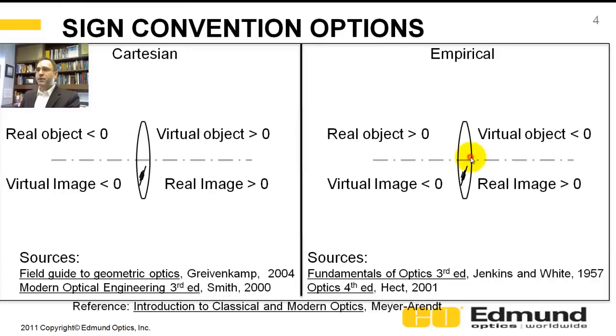As opposed to the empirical where if you have a real image to the left of your lens, you're going to have a positive distance. And this flips when you're doing an image to the left of the lens. It will be a virtual image. It's inside the lens. You can't physically touch it or image it onto a piece of paper. It is negative.